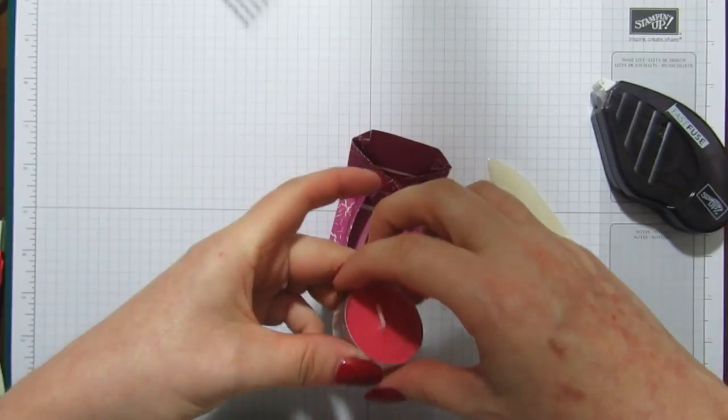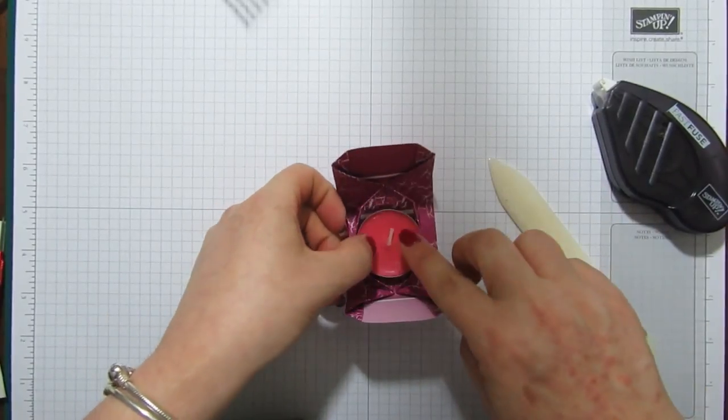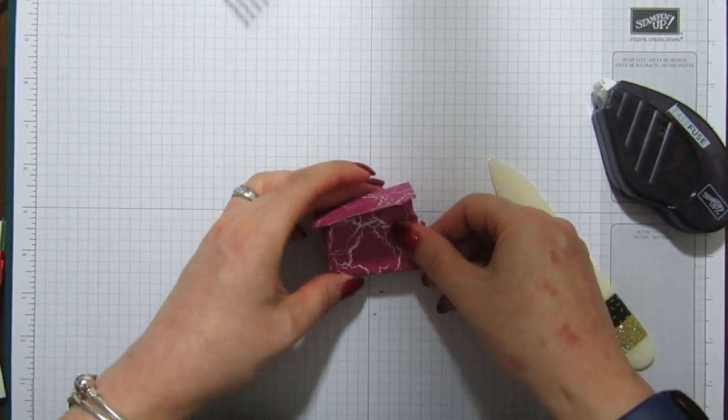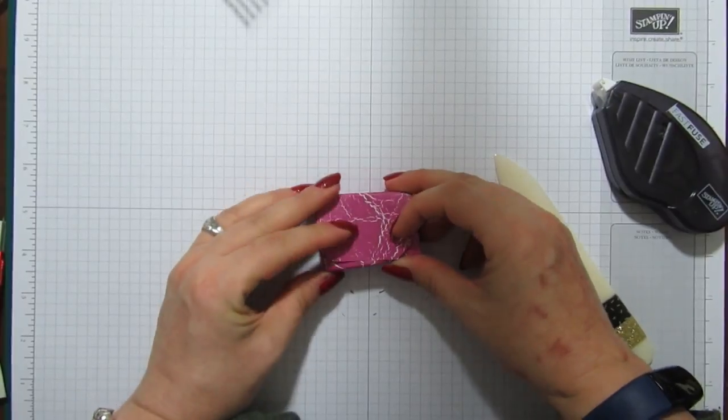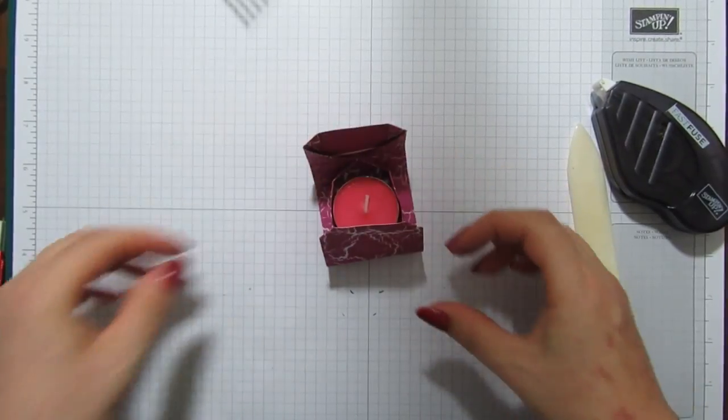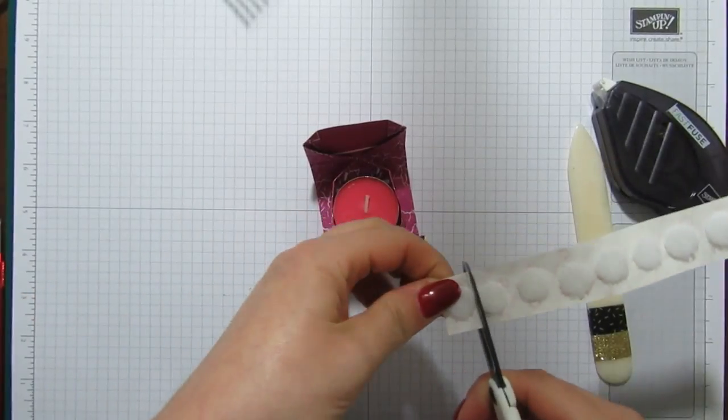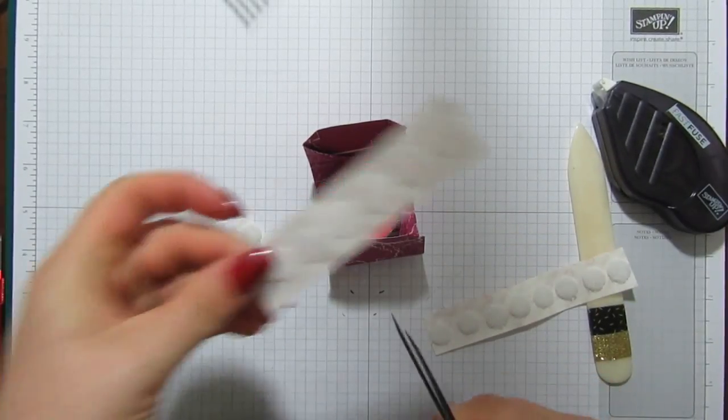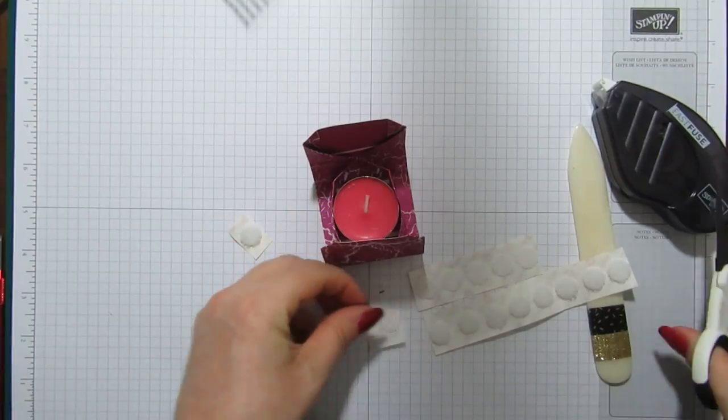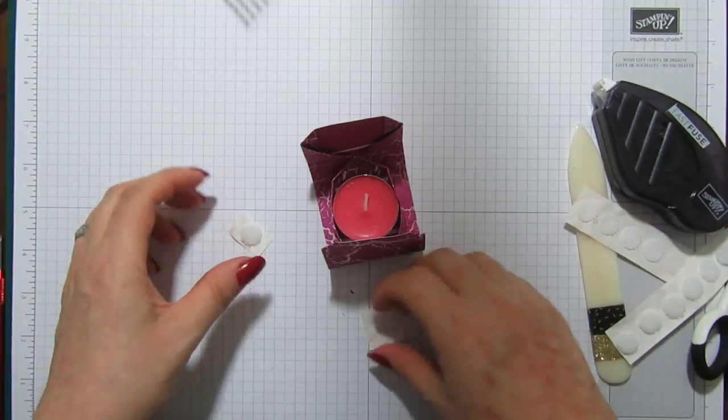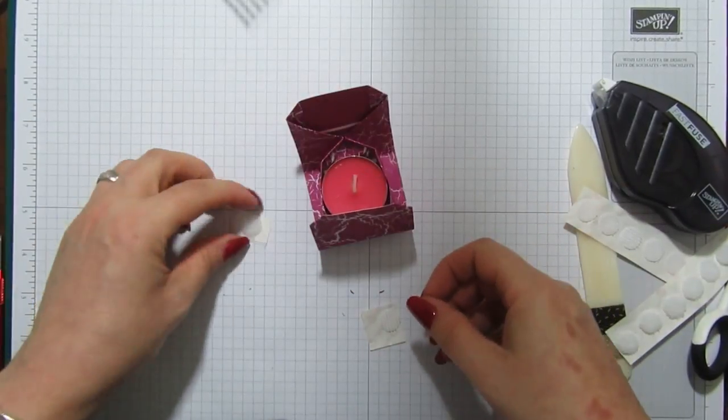And then now we'll fold over, fold over like that. How sweet is that? So I've got a little tea light, just going to pop it in. And this time I think I'm just going to use a velcro dot. You can use whatever you like. I'm just going to put a little velcro dot. So I'm going to have a fluffy piece just there.